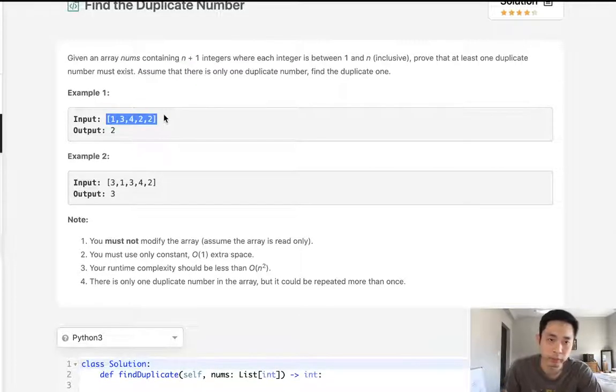This is a pigeonhole problem and we know that if there are n plus 1 integers and every number is between 1 and n, there's going to be at least one duplicate and we can just know that intuitively. So how can we solve this?